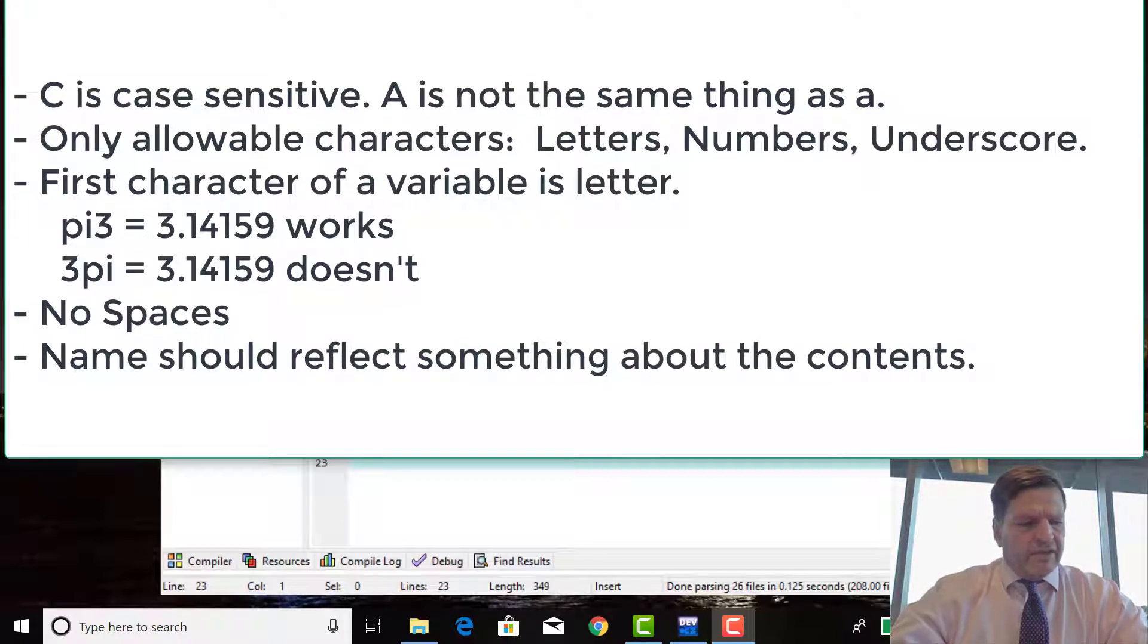The last piece of advice is 100% advice: the variable names should represent something about the content that they're holding. So avg, that looks a little like average, right? It makes sense. A, B, and C don't. A, B, and C are just raw variable names, just letters.